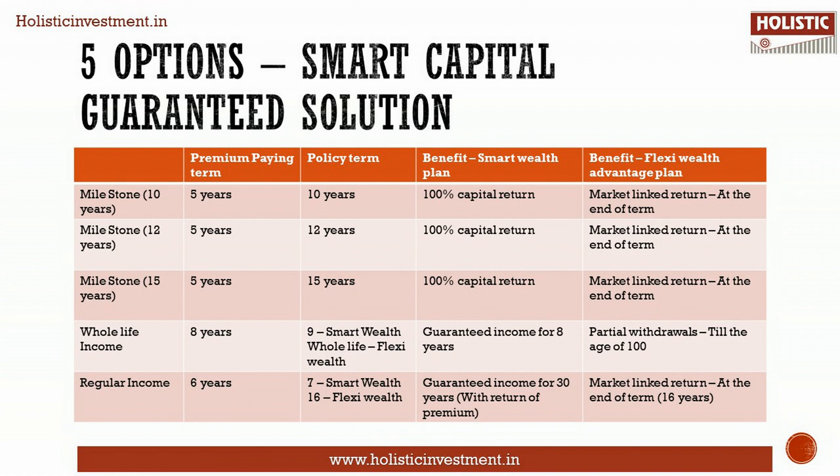Under the Whole Life option, the maturity benefit of Flexi Wealth Advantage is the option to do partial withdrawals from fund value till 100 years of age. For the Regular Income option, the premium paying term is 6 years; the policy term for Smart Wealth Plan is 7 years and for Flexi Wealth Advantage Plan is 16 years. The maturity benefit of Flexi Wealth Advantage is the fund value paid at the end of the 16-year policy term.